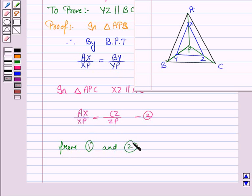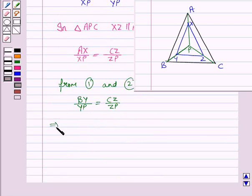we have BY upon YP is equal to CZ upon ZP. So, this implies YZ is parallel to BC by the converse of BPT.